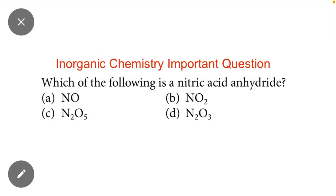Welcome to Chemistry Academy students. In this video we will study the most important questions of inorganic chemistry. The question is: which of the following is nitric acid anhydride? Nitric acid anhydride means when we heat the nitric acid with the removal of water molecule, a new compound is formed. We have to identify that compound which is called anhydride of nitric acid.